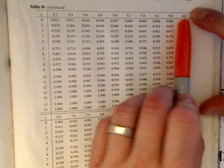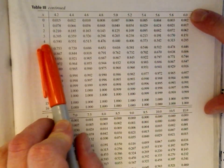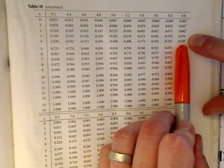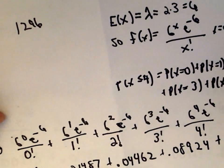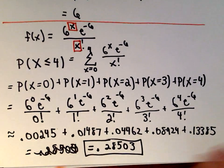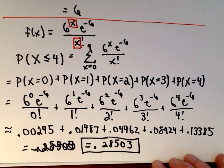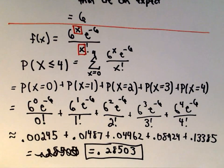With lambda equal to six across the top and x ≤ 4 on the left, I find where the row and column intersect and get 0.285 — matching our hand calculation of 0.28503. That's how you use the table quickly.